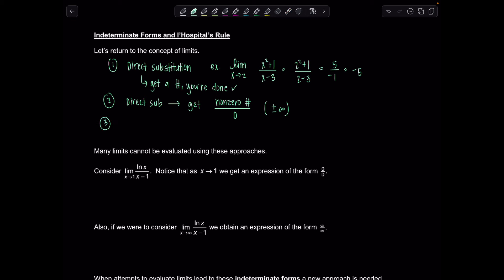Another scenario that's popped up is an indeterminate form of the type 0/0. Indeterminate doesn't mean the limit doesn't exist — it means when it's in this form, we can't determine what the limit is. It could go to infinity, negative infinity, 0, 1, 4/7 — I can't determine it. Up till now, anytime you've had this indeterminate form, you've done one of three things: factoring and simplifying, multiplying by the conjugate, or using the squeeze theorem.